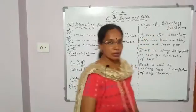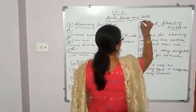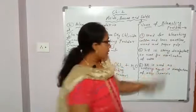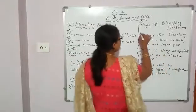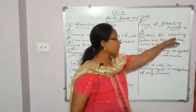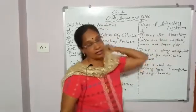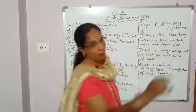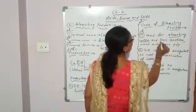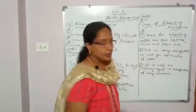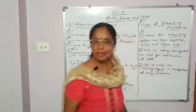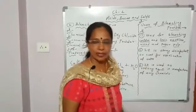Uses — this is important. Uses of bleaching powder. First use: it is used for bleaching cotton and linen textiles, and also wood and paper pulp. This is one of the uses of bleaching powder.